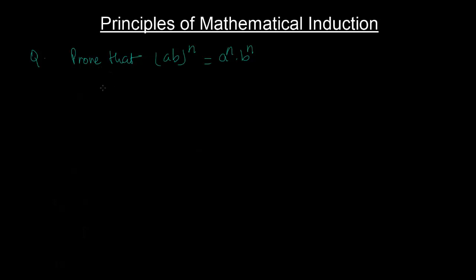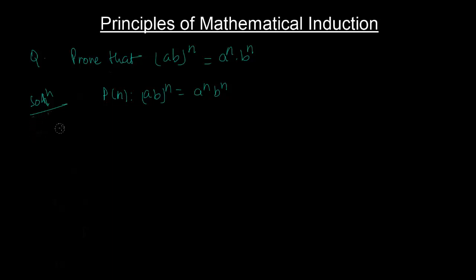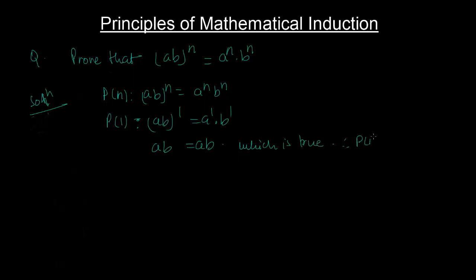Let's try to understand this using PMI. First, I set what P(n) is — P(n) includes both the LHS and RHS of this statement. Now checking P(1): (ab) to the power 1 equals a to the power 1 times b to the power 1, which gives ab = ab. This is true, so P(1) is true and the trigger is set.